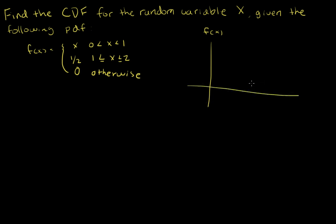Let me go ahead and draw this out. So f of x when x is less than or equal to 0, it's 0 because it's 0 otherwise. The next interval is between 0 and 1 — open circle at 0 and an open circle at 1 — and the value of f of x is x, so it looks like that.